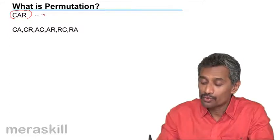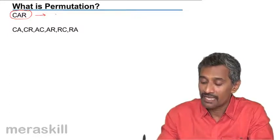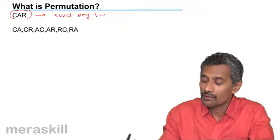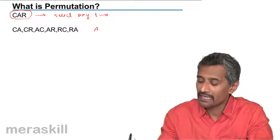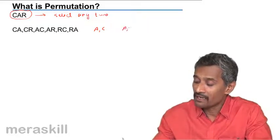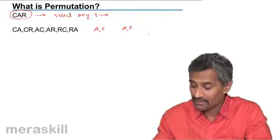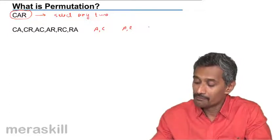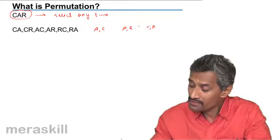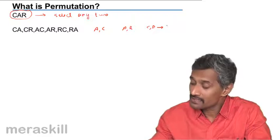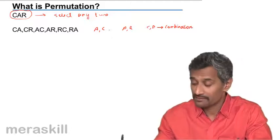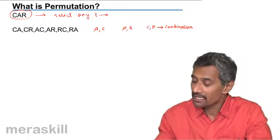Suppose I need to select any two of these letters. I may select A and C, which is the same as selecting C and A. Or I may select A and R, which is the same as selecting R and A. Or I may select C and R, which is the same as selecting R and C.